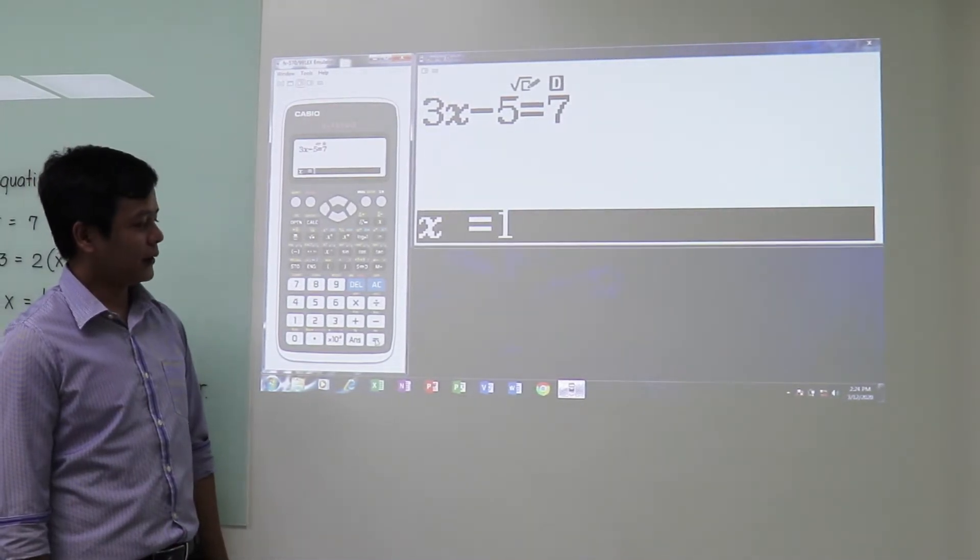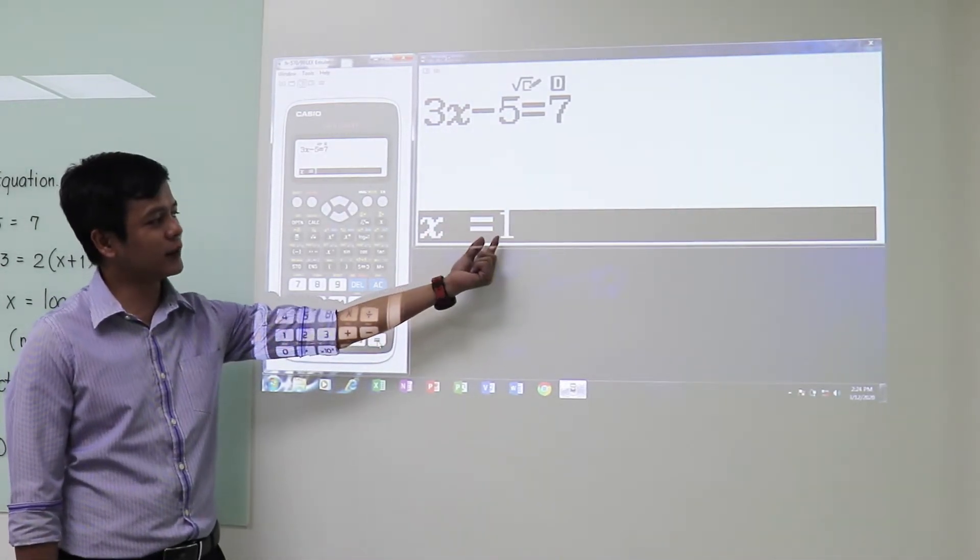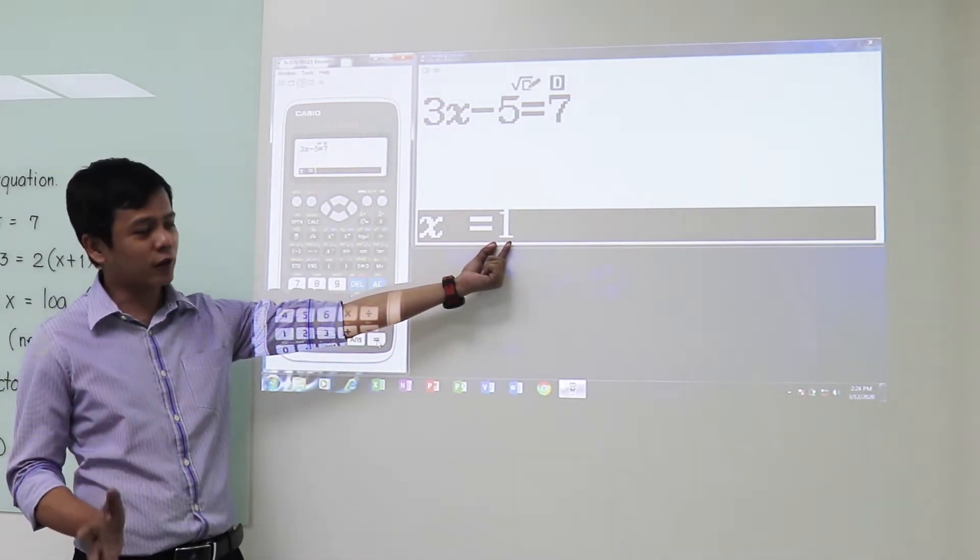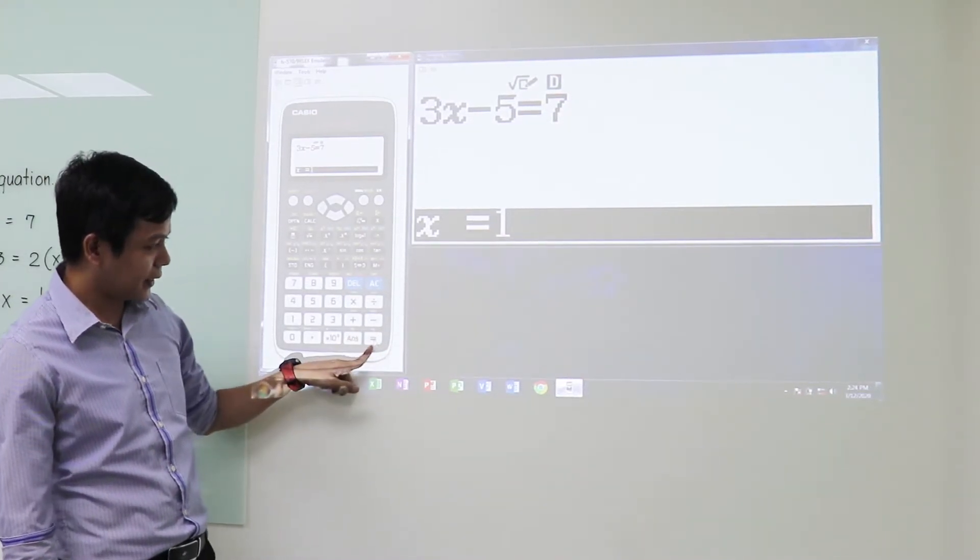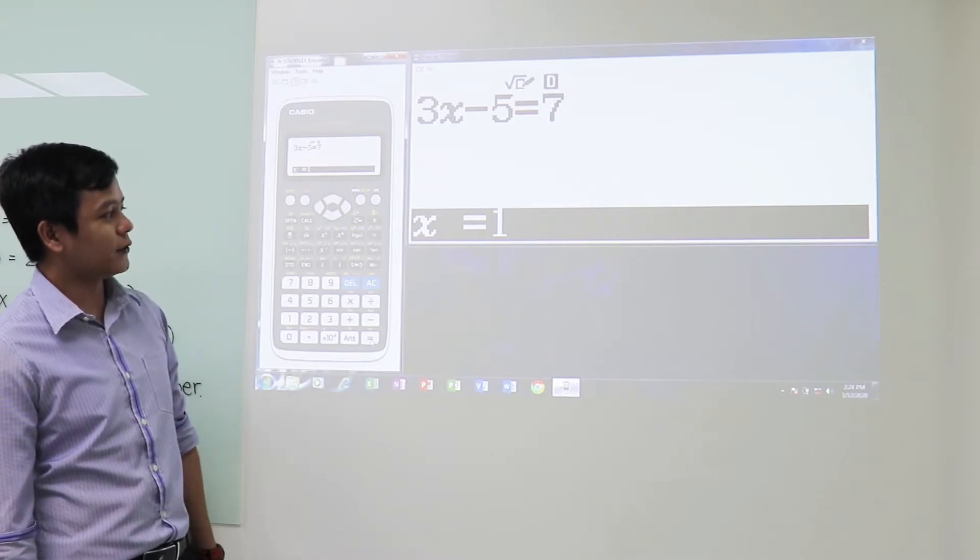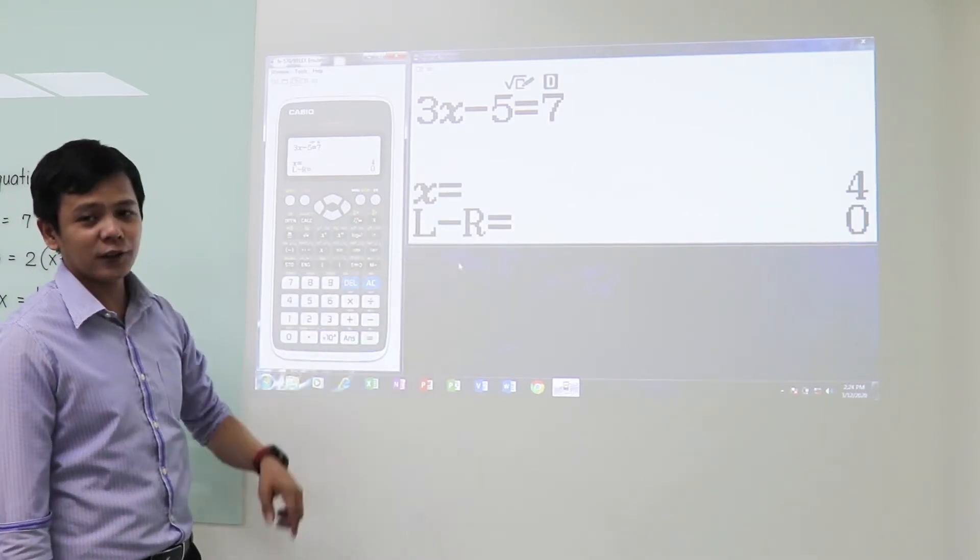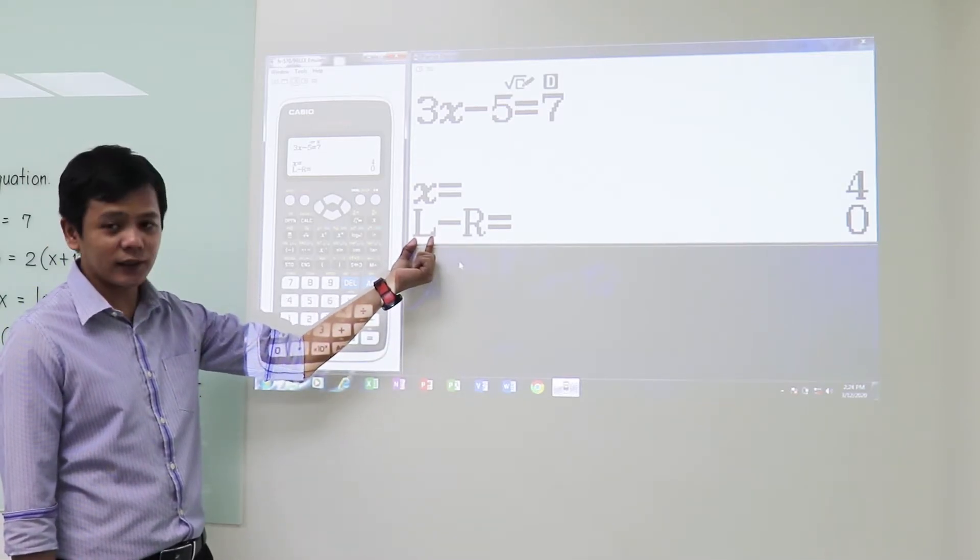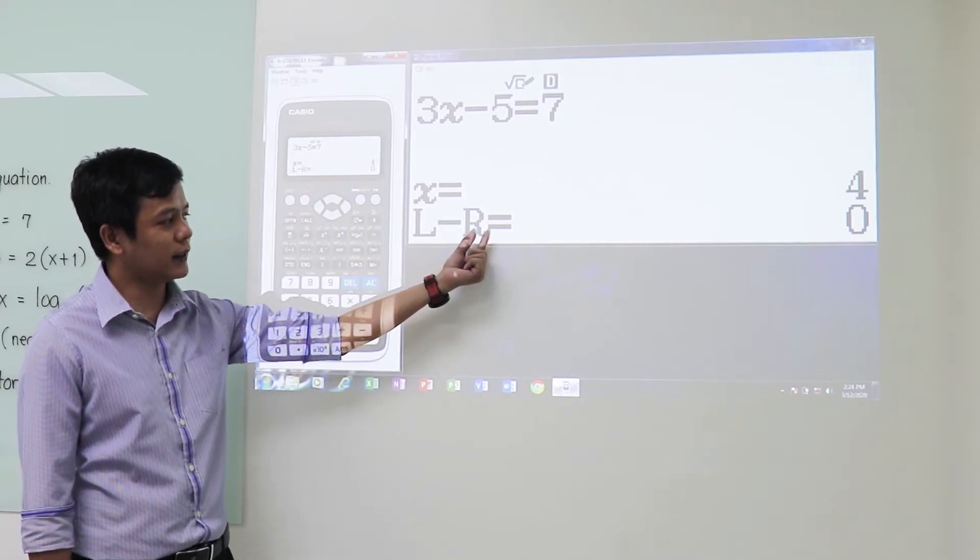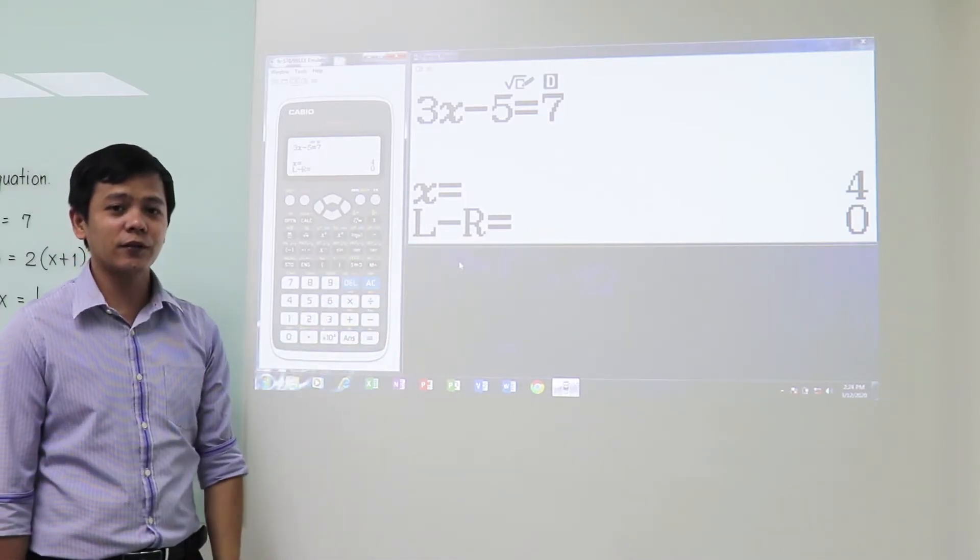All right, wait. This is not yet the answer because this was the previous answer after solving some equations. What we have to press now is the equals for us to be able to get the value of x. And that's the value of x. Once you see this L minus R, meaning the left-hand side minus the right-hand side is equal to 0, then this is already the value of the variable that we are looking for.